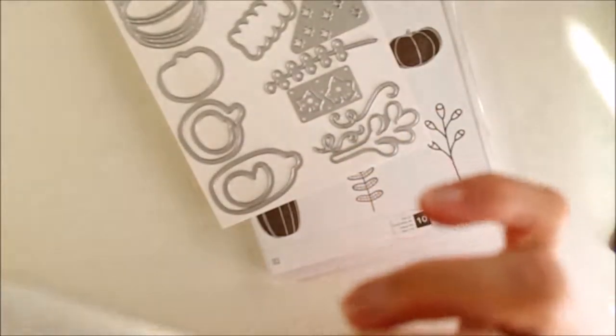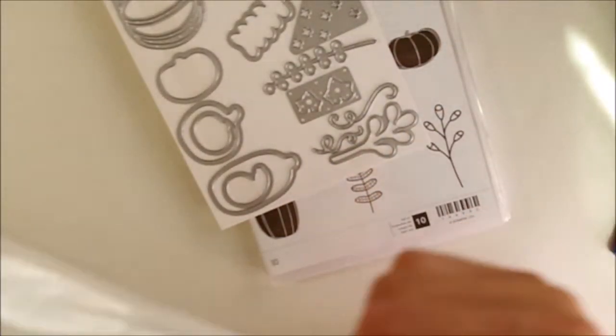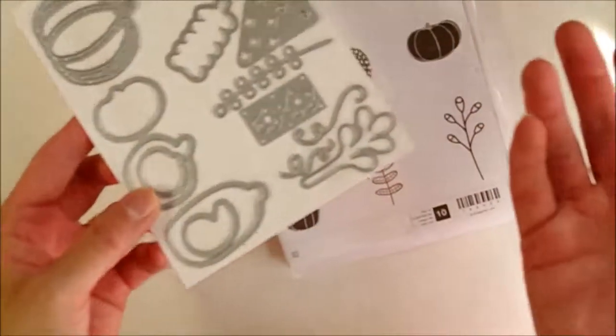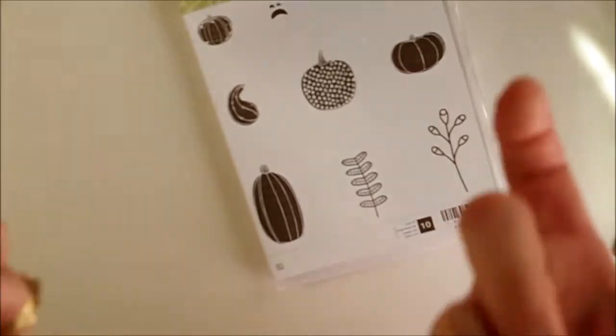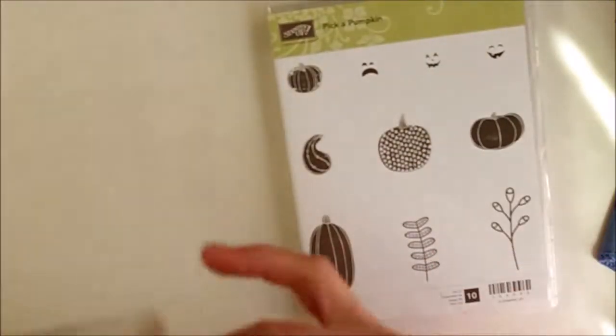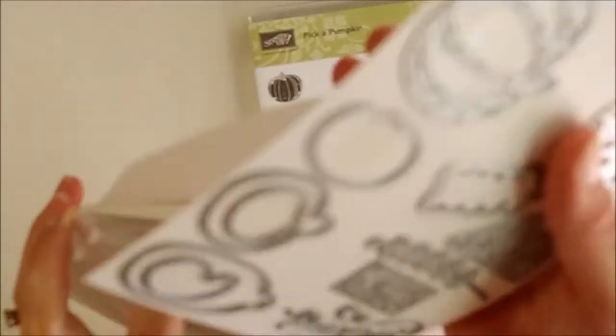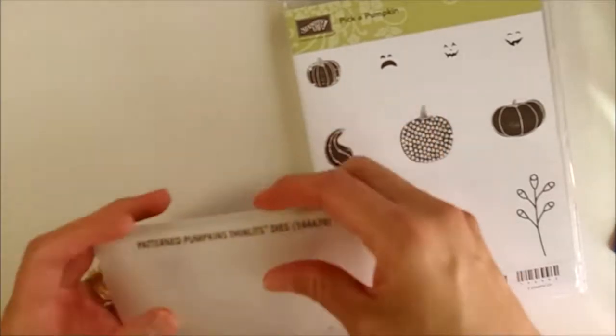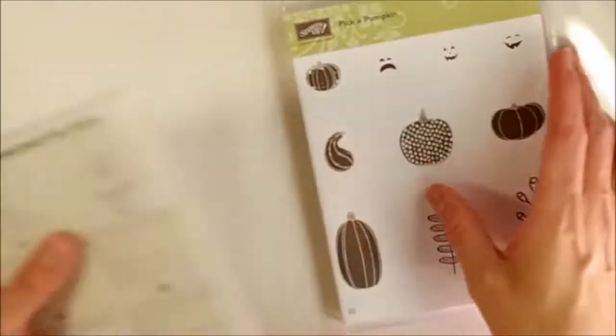It's adhesive sheets from the annual catalog. You can put your dies right on it, run it through, and they're going to be sticky when you're done. That's really exciting for little things like this that are hard to put a glue dot on. The white Tombow glue gets messy and I don't like messy, at least with adhesives.